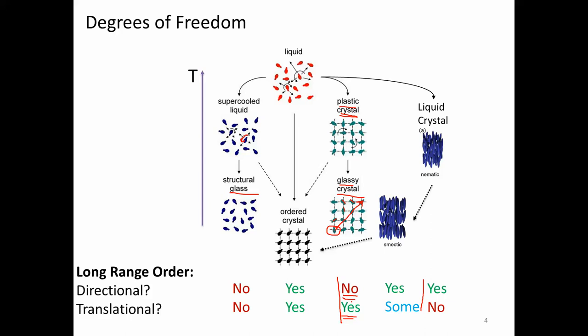You can start to think about all kinds of different combinations. Smectic liquid crystals are a case where they have translational order in one direction but not another. You could work your way through a table and ask what it would mean to have directional long range order in some axes but not others — there are all kinds of weird intermediate states. We're going to explore a couple of these other intermediate cases today and give examples of why they're technologically useful.